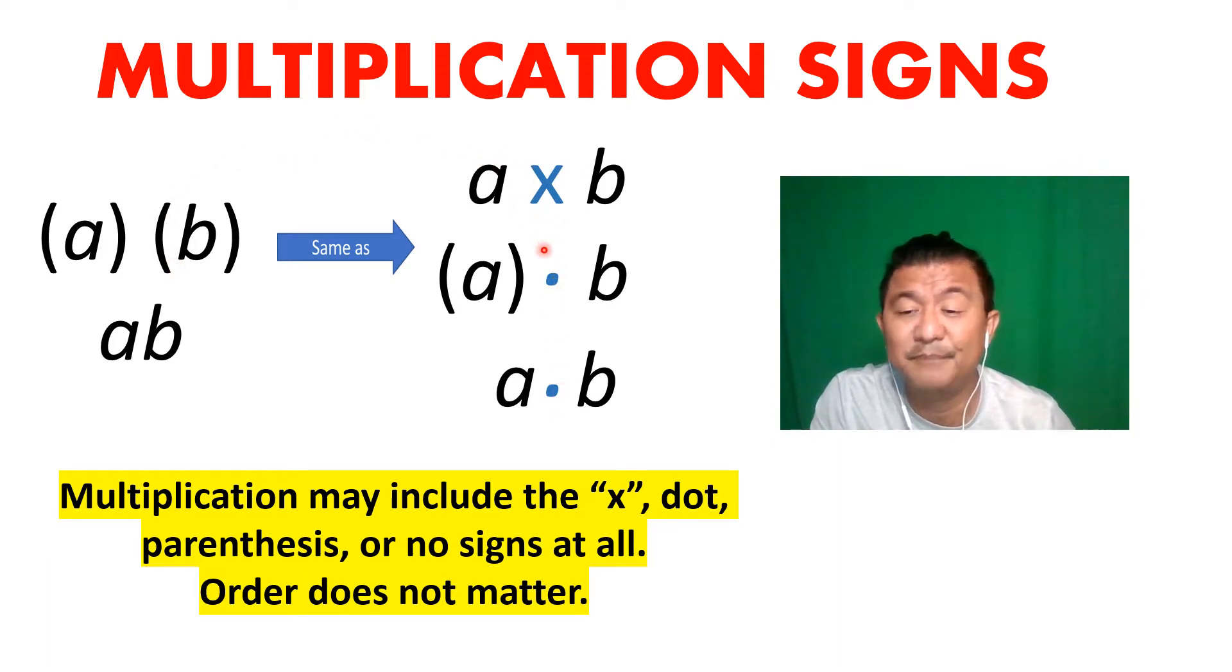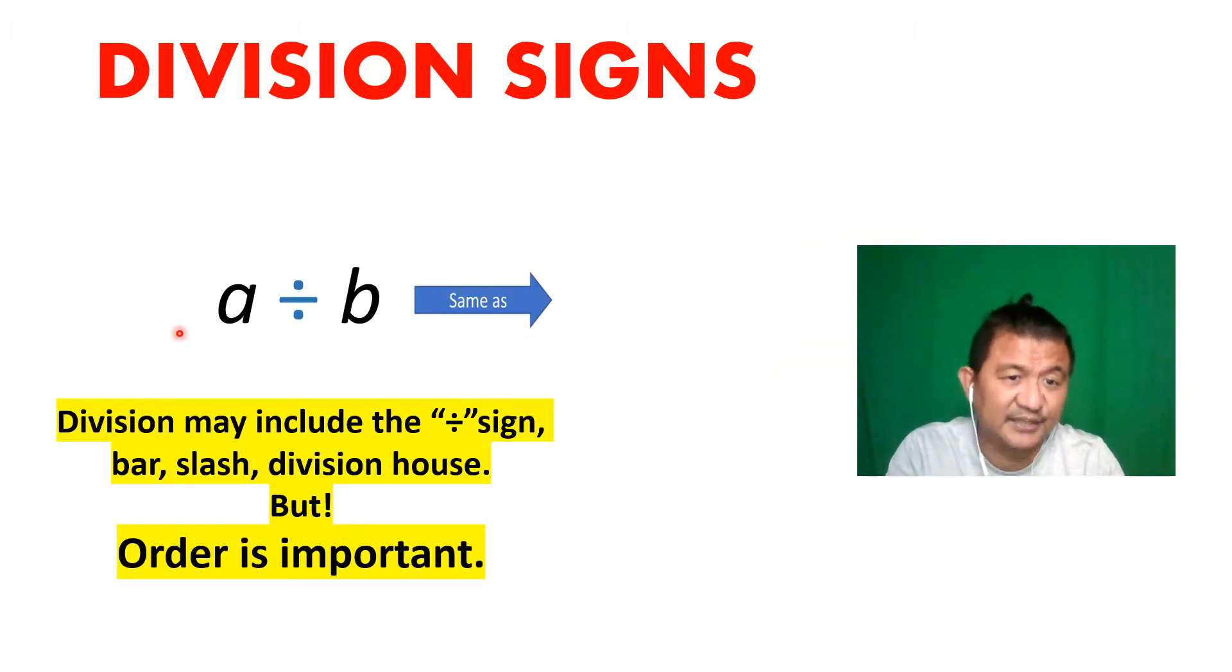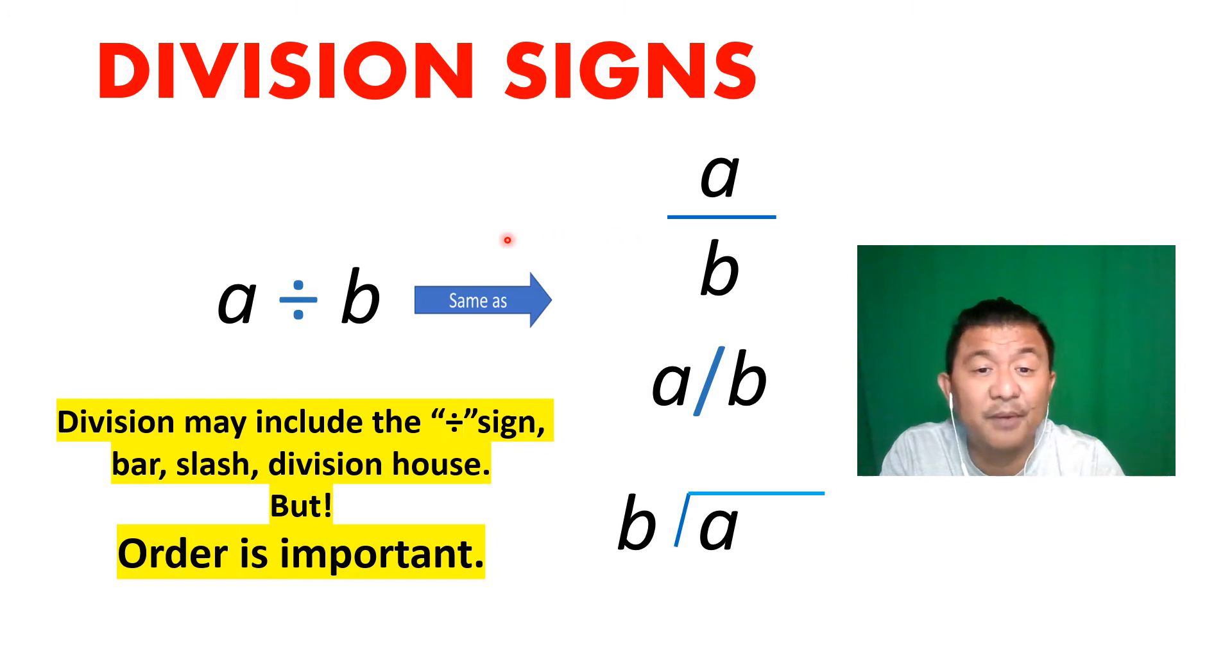Division sign: yes, this is the most common division sign, that line with two dots. But it could disguise itself as a fraction bar, a slash, or a division house. In division, the order is important. The first letter should be on top, or if you use the division house, letter a should be inside.